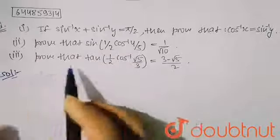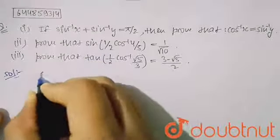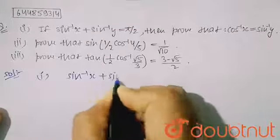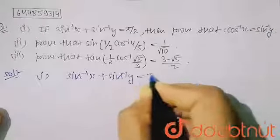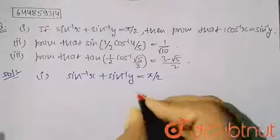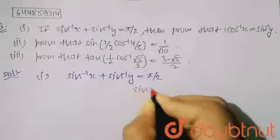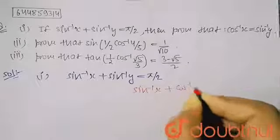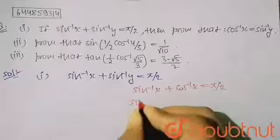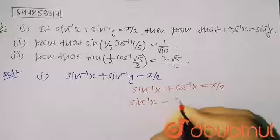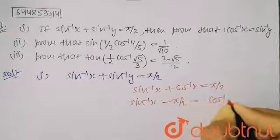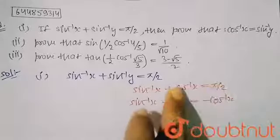For Part 1, it is given that sin⁻¹x + sin⁻¹y = π/2. I know the formula that sin⁻¹x + cos⁻¹x = π/2, which means sin⁻¹x − π/2 = −cos⁻¹x. I have taken π/2 to one side and cos⁻¹x to the other side.